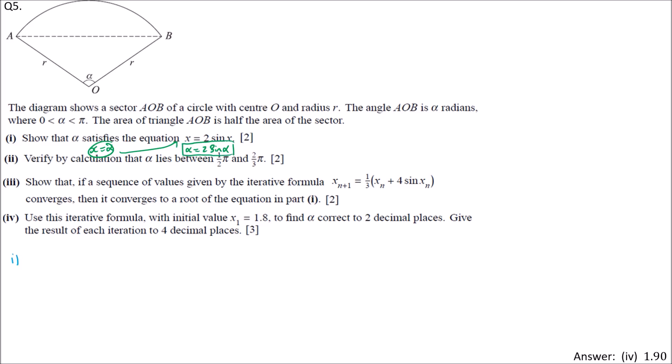First part. The information given is area of triangle AOB equals half times area of sector. Area of triangle AOB, we calculate using half AB sin C, which is half times A times B. This gives half R squared times the included angle alpha times sin alpha equals half times area of sector. We calculate using half R squared theta.